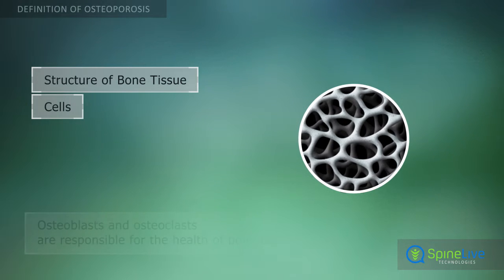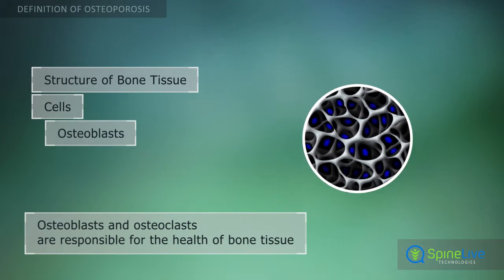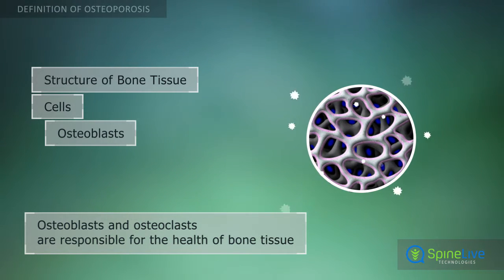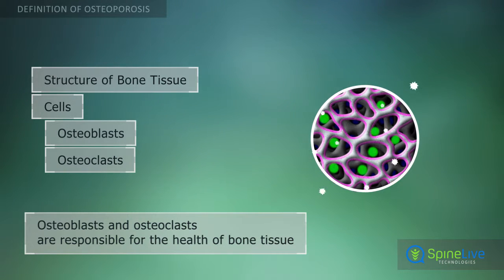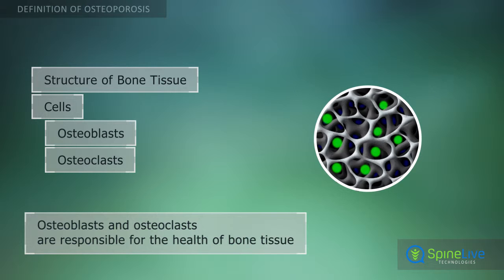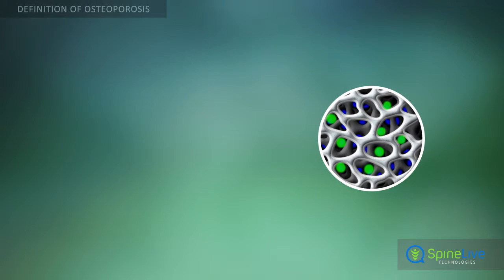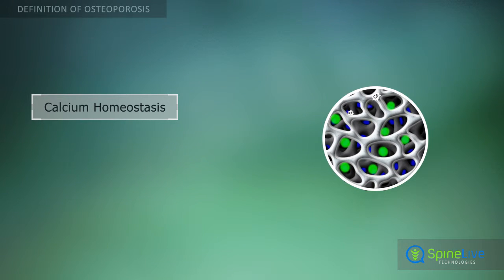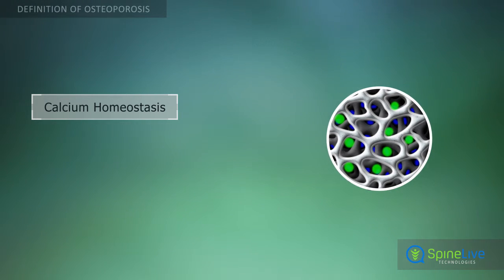Two major types of cells make up bone tissue. Osteoblasts are bone-forming cells; they secrete bone matrix and are also responsible for mineralization. Osteoclasts help in the removal of old bone cells. When bones contain adequate amounts of calcium, the osteoblasts and osteoclasts are in balance, and bones are healthy and strong.